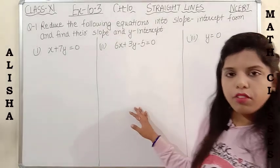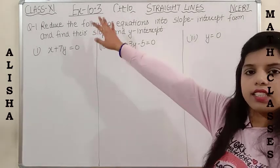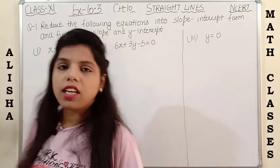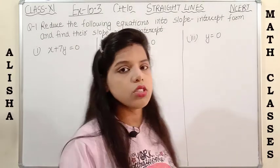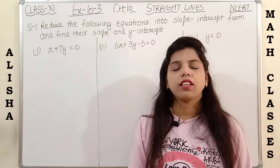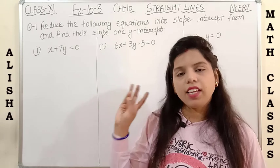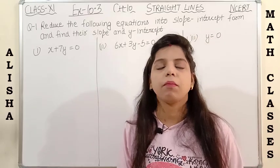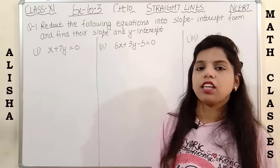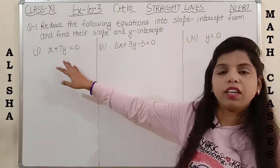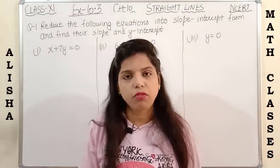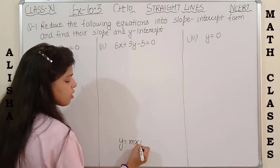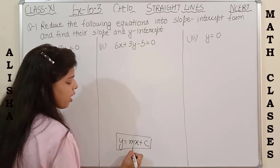Now we'll start from Question 1 of Exercise 10.3. The question is: reduce the following equations into slope-intercept form and find their slope and y-intercept. We have done all types of equations of a line in the introduction part — slope form, slope-intercept form, normal form. The slope-intercept form is y = mx + c.